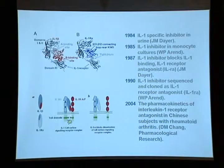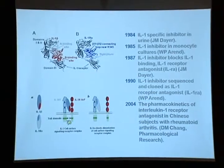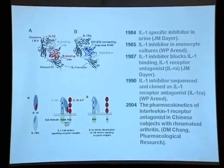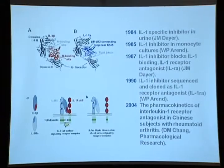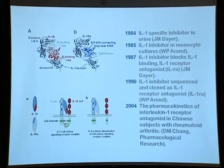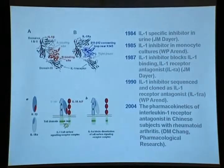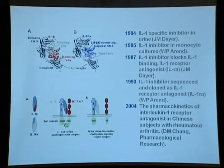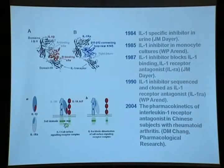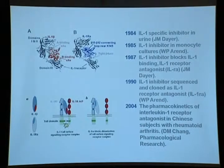Since 1984 and 1985, both Professor Dinger and Professor Erie identified an IL-1-specific inhibitor in urine. IL-1RA became a new possible drug for treating rheumatoid arthritis.